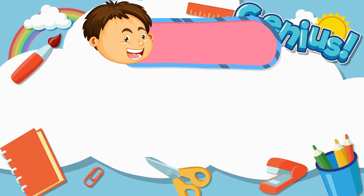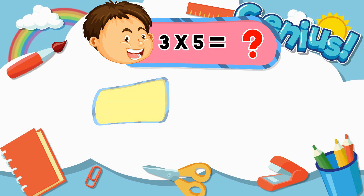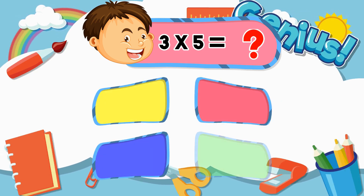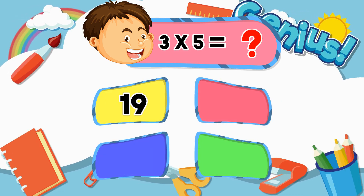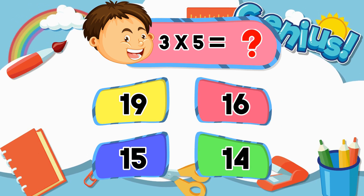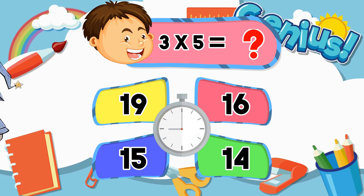What is 3 times 5? 19, 16, 15, 14. The correct answer is 15.